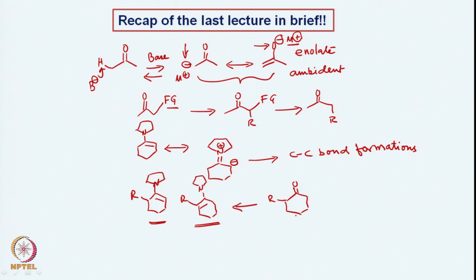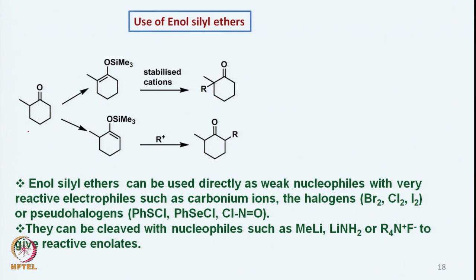These problems of enamines or enolate chemistry can be somewhat avoided if we go for enol silyl ethers. As you know, we can take an unsymmetrical ketone and at a high temperature — for example, using triethylamine and chlorotrimethylsilane at about 100°C — we can easily make one type of enol silyl ether. On the other hand, if we use a base as strong as LDA at minus 78°C, then we can get the other type of enol silyl ether. So we have conditions under which different types of enol silyl ethers can be obtained.